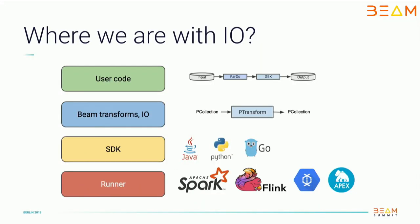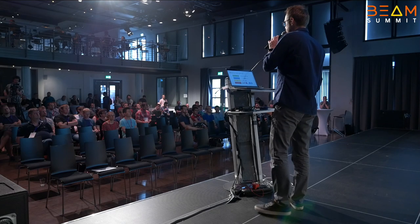So actually, where are we with I/O? In the Beam codebase we can say that we have kind of four layers of code. One layer is a runner, which is responsible for working with the backend data processing system like Spark, Google Dataflow, and others. Another layer is the SDK, which provides you the API to use in your favorite language. On top of that we have a bunch of already implemented Beam transforms. And an I/O connector is just another Beam transform — it is also a data processing task.